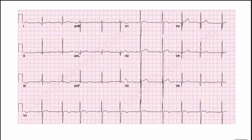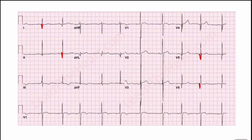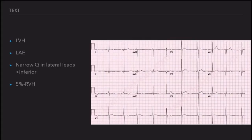The most important ECG findings in HOCM are: left ventricular hypertrophy in young patients, left atrial enlargement, and most importantly, narrow Q-waves in lateral leads — leads I, AVL, V5, and V6. Although Q-waves usually indicate MI, in a young patient presenting with syncope, if you see narrow Q-waves in lateral leads associated with left ventricular hypertrophy, always suspect Hypertrophic Obstructive Cardiomyopathy. These narrow Q-waves can sometimes also be seen in inferior leads, but are most common in lateral leads. In 5% of patients, right ventricular hypertrophy may also be present.